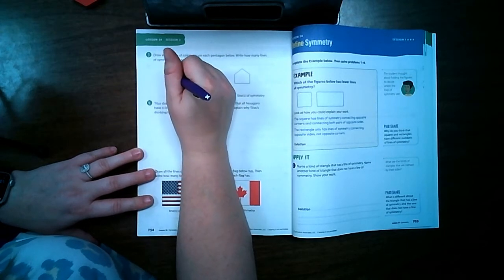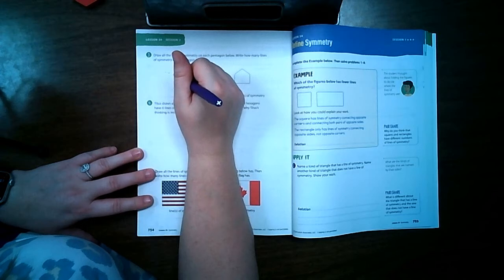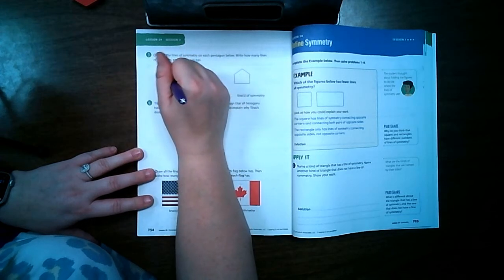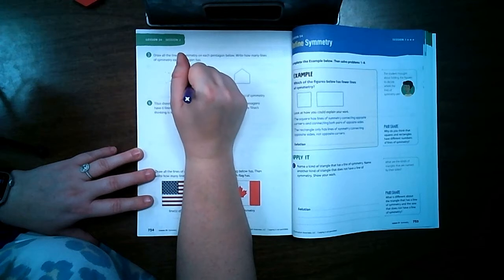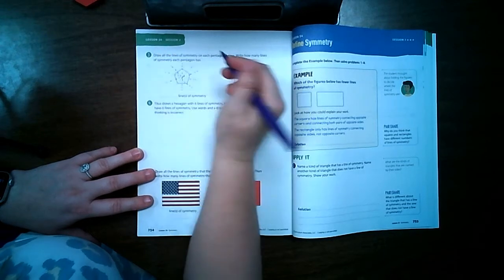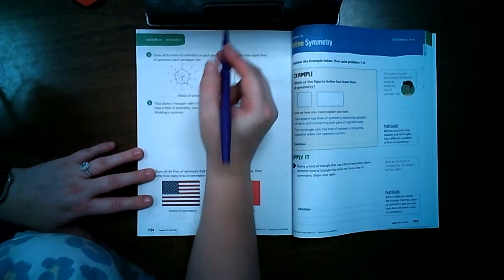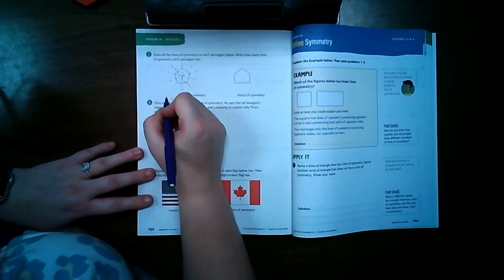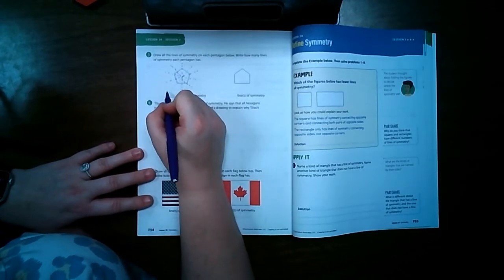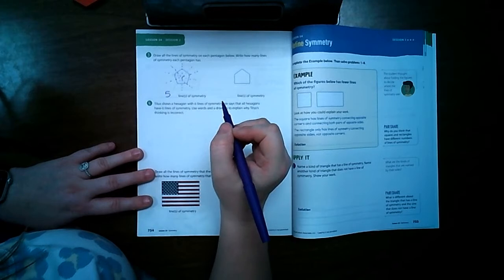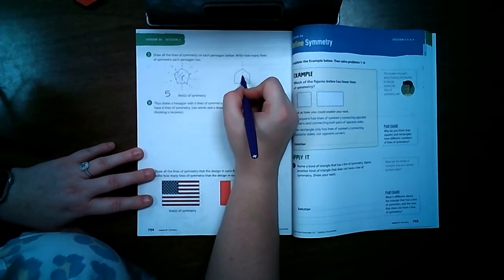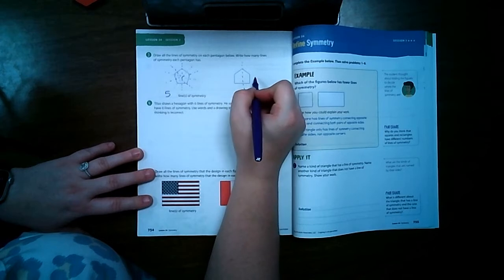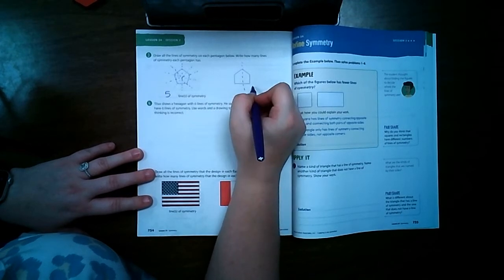I think if I start at each point and go down, each point is a different line of symmetry. So a pentagon has five points and it has five lines of symmetry. Okay, this is a different shaped pentagon though. It goes this way, can't do that way, can't do that way, and I can't do that way, so this one only has one line of symmetry.